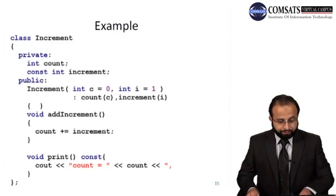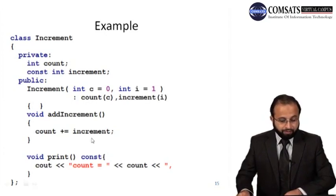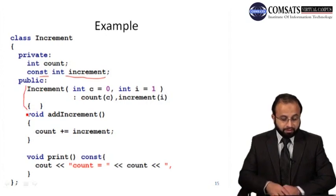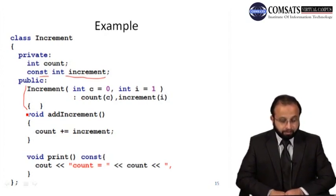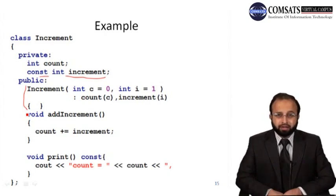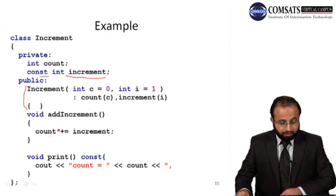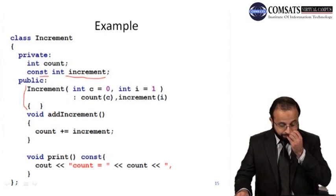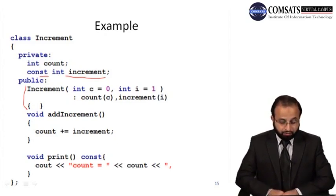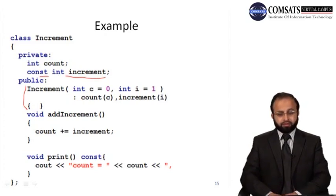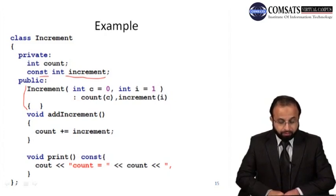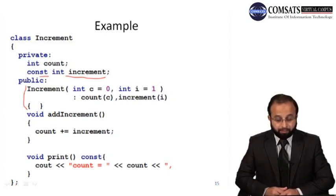Let's see the example program. We have two private data members: count (a simple int) and increment (a const int). The increment represents a fixed step size. The addIncrement function increments count by the increment value. The print function is also a constant function, outputting the count value — it is const because we don't want it to modify the object's private data members.